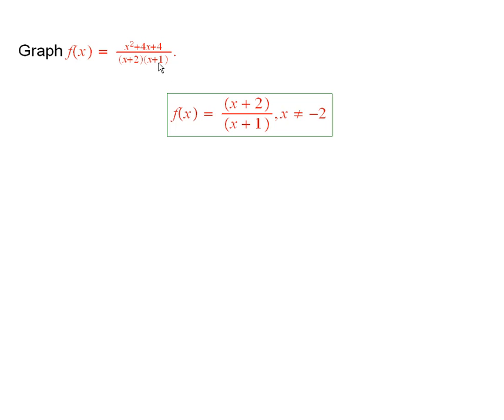Now this is a little tricky because the numerator, the top here, vanishes when x is equal to minus 2. Because the top is really just x plus 2 squared. And so the function really simplifies. f of x is equal to x plus 2 over x plus 1.